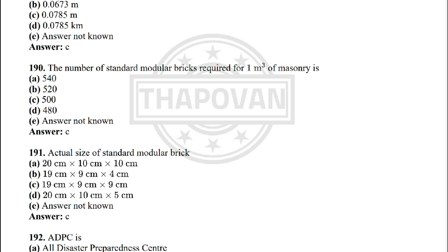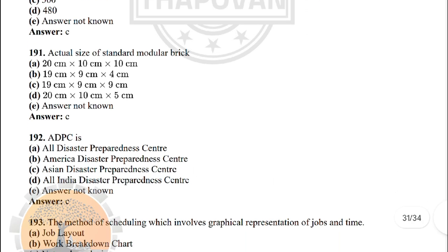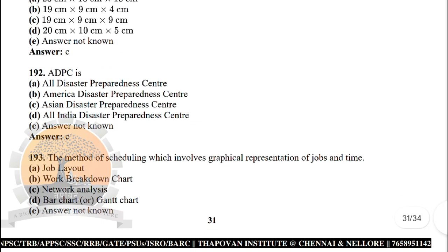Next: the number of standard modular bricks required for one m³ of masonry is — the correct answer is option C: 500. Next: the actual size of the standard modular brick is — the correct answer is option C: 19 × 9 × 9 cm.